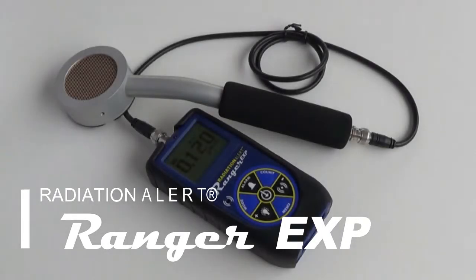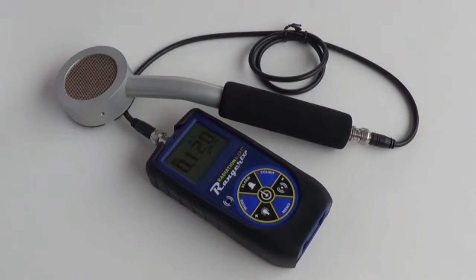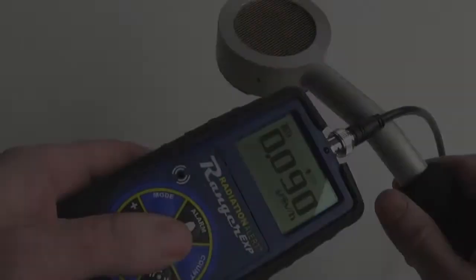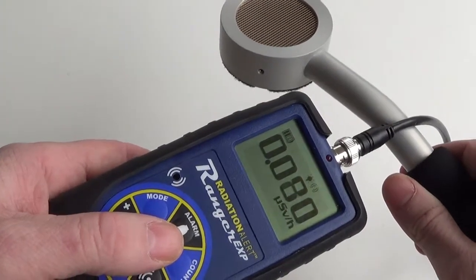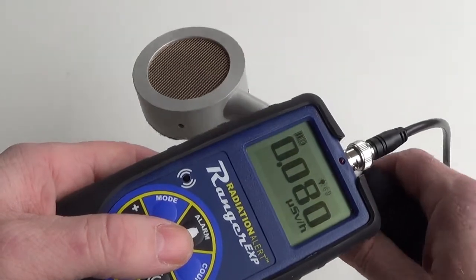Hello and welcome to the Radiation Alert Quick Start Guide for the Ranger EXP Radiation Detector. The Ranger EXP is an ionizing radiation detector that detects alpha, beta, gamma, and x-ray radiation.